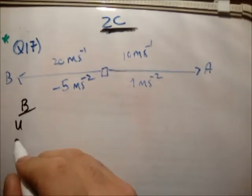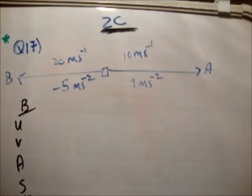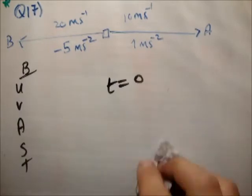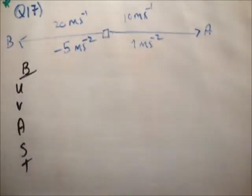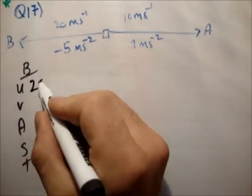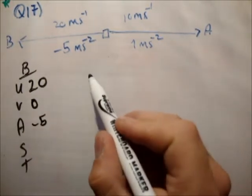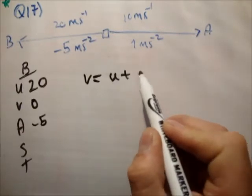So for car B, we'll use the usual UVAST formulae. When this passes a traffic light, that basically means that the starting point is the traffic light, and we're going to call that at the traffic light, T is equal to 0. So we'll say his initial speed at T equals 0, at the traffic light, is 20. He goes to rest at a deceleration of minus 5.